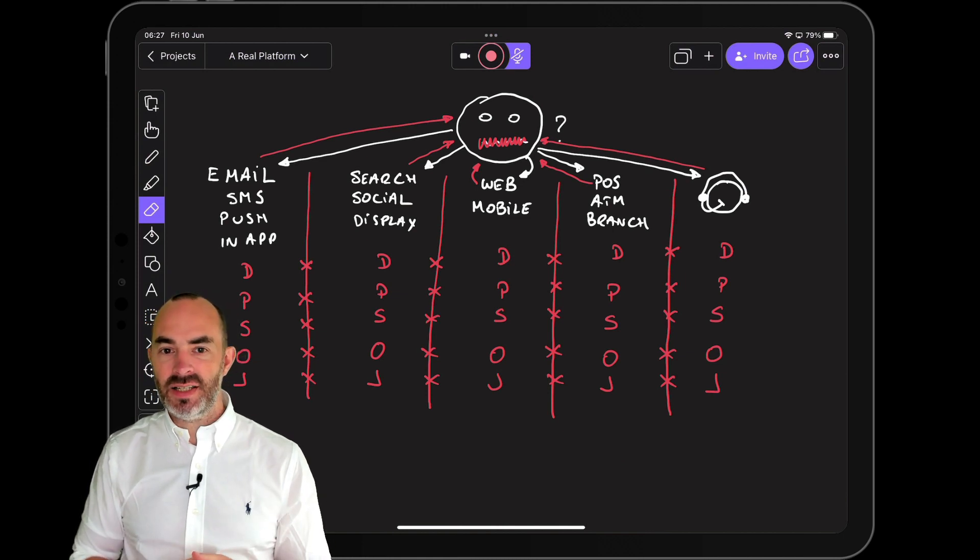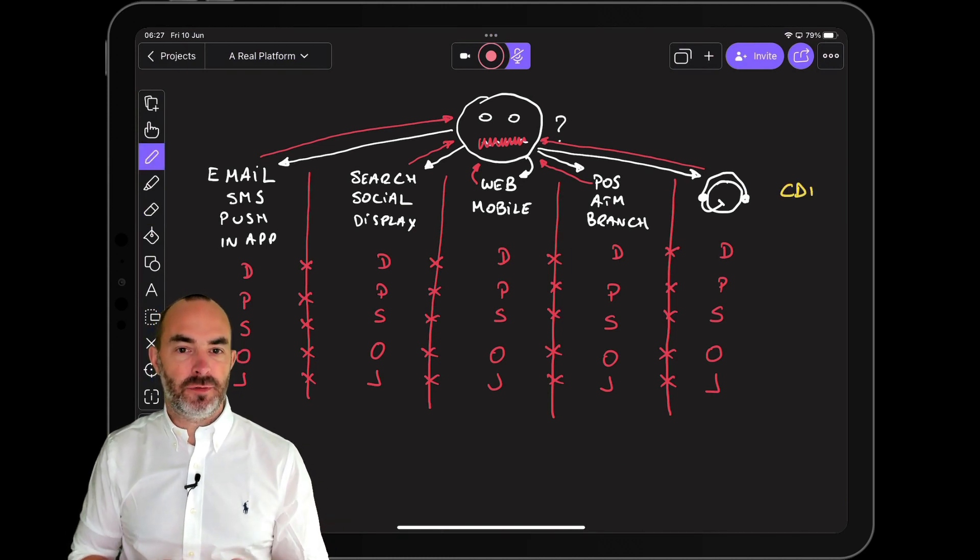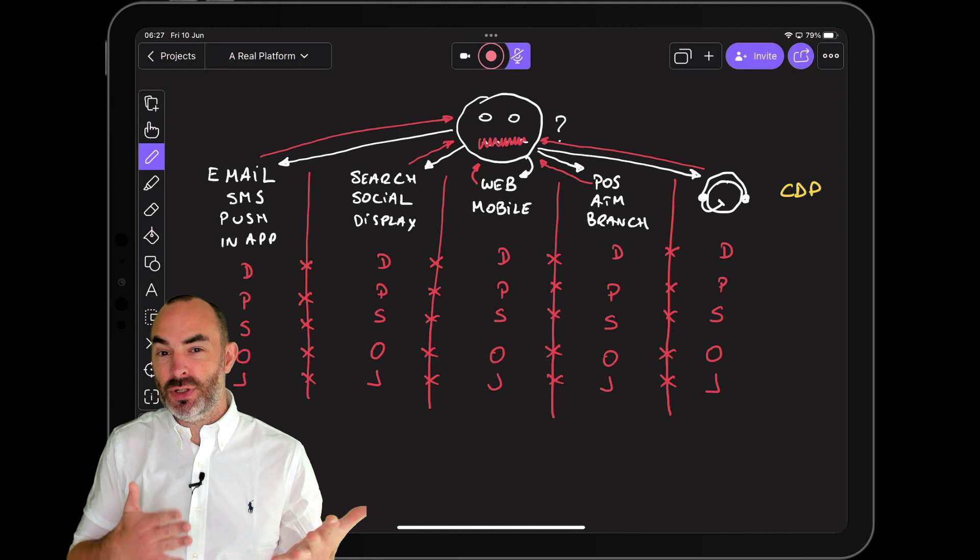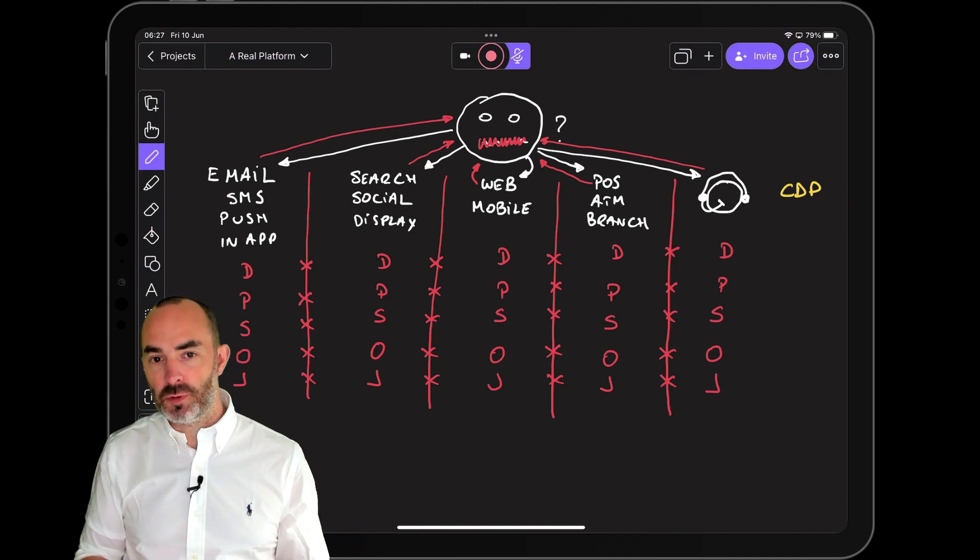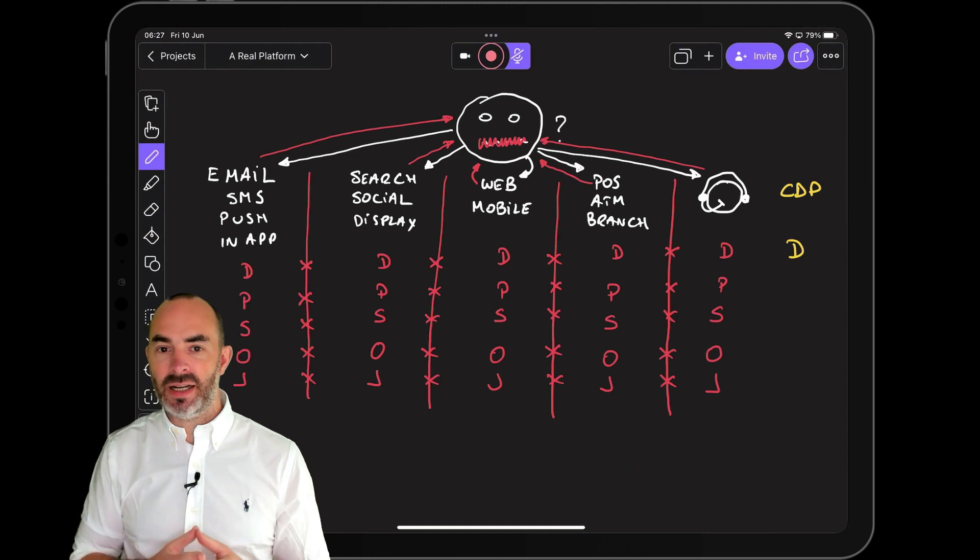The next acronym these days is the CDP, Customer Data Platform. When selecting and implementing a CDP, you really have two options. Either you do the same thing that you've done multiple times before and you get the same incomplete outcome, or you can consider a new approach.